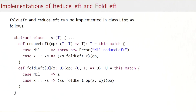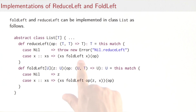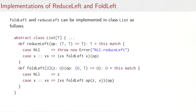Here are some possible implementations of foldLeft and reduceLeft as methods in class List. For reduceLeft, it takes an operation from two list element types returning a result of that type. The list must be non-empty, so in the case of nil we throw an error. If the list consists of a head x and a tail xs, we forward to the foldLeft method with zero element x and the operation passed to reduceLeft.